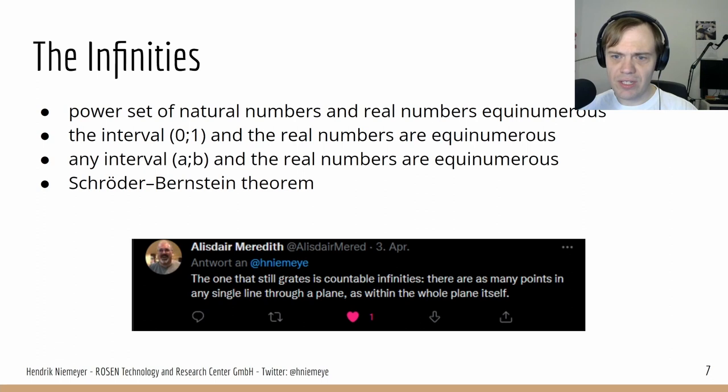For example, the power set of natural numbers and the real numbers are equinumerous, have the same number of elements. The open interval 0, 1 and all the real numbers are equinumerous. Any open interval and the real numbers have the same number of elements or are equinumerous.